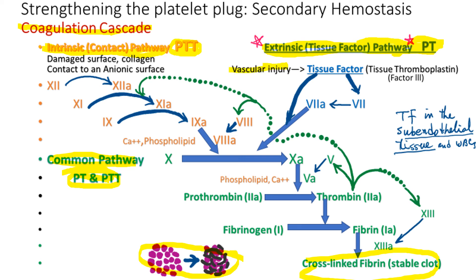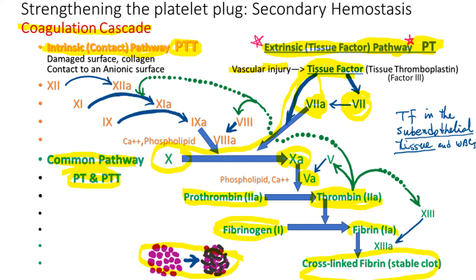When vascular injury occurs, tissue factor in the subendothelium is exposed to the blood and activates factor VII. Tissue factor also helps activated factor VII to activate factor X. From factor X onward is the common pathway. Activated factor X converts prothrombin to thrombin with the help of factor V — remember that activated factor V is released from the alpha granule of the activated platelet during primary hemostasis. Thrombin then converts fibrinogen to fibrin, and factor XIII initiates fibrin cross-linking to make a hard, stable clot.